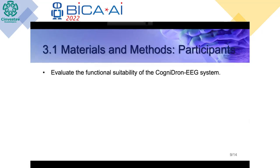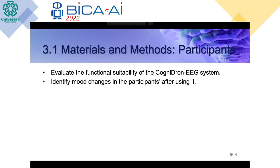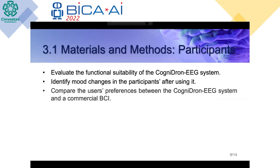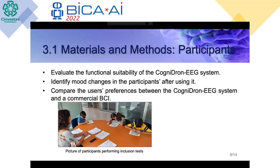We conducted a controlled trial with three purposes: first, to evaluate the functional suitability of the CogniDrone EEG system; second, to identify mood changes in participants after using the system; and third, to compare user preferences between CogniDrone EEG and a commercial BCI, the Nexus system. The evaluation consisted of two stages. The first was to gather a group of children whose parents consented to participate, then apply some psychological assessments.